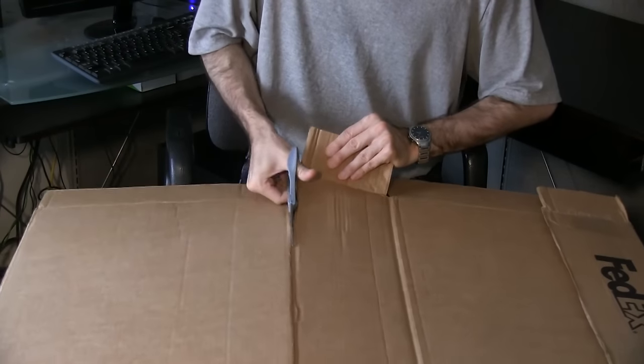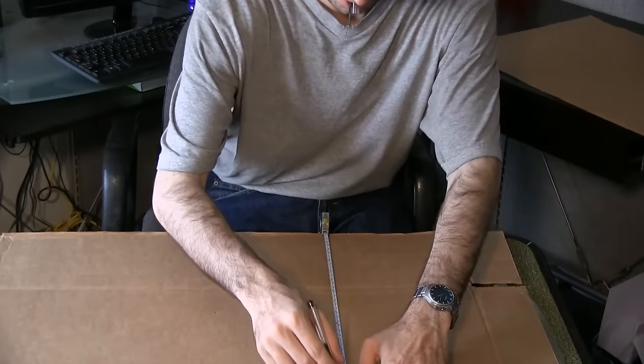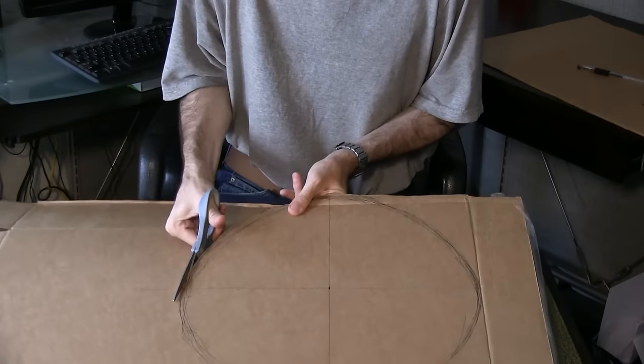First, cut out a large rectangle of cardboard, 33 inches by 16 inches. Use the width measurement as a diameter to draw a circle on another piece of cardboard and cut it out.